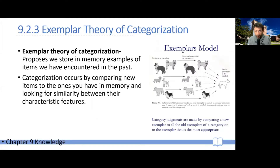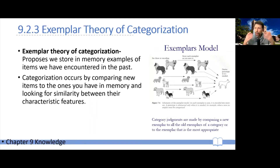The exemplar theory of categorization proposes that what we do is actually store in memory all the exemplars we've encountered in the past. Any exemplar you've encountered, you retain it, and when you meet a new exemplar, you categorize it by comparing it to all the exemplars stored in your memory.